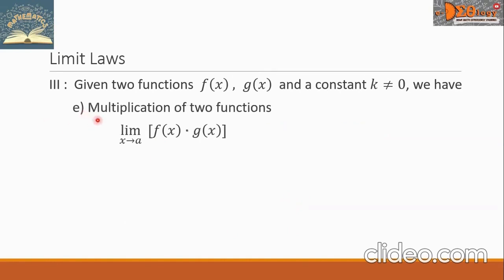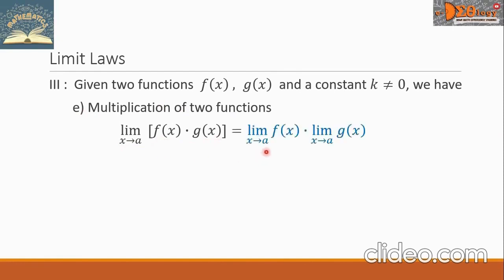Letter E — multiplication of two functions. The form is the limit as x approaches A of f of x times g of x. To simplify this, we take the limit of each factor and then multiply the limits. So we have the limit of f of x as x approaches A, times the limit of g of x as x approaches A.